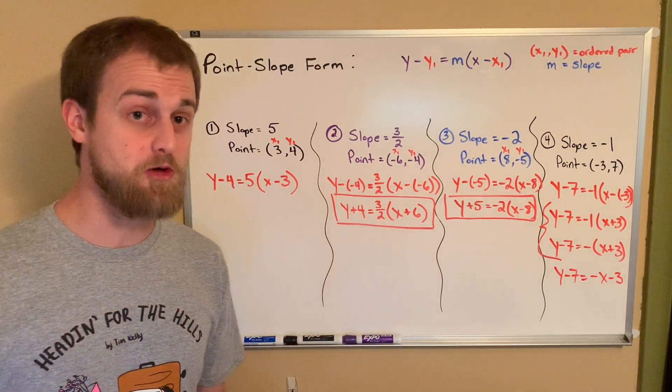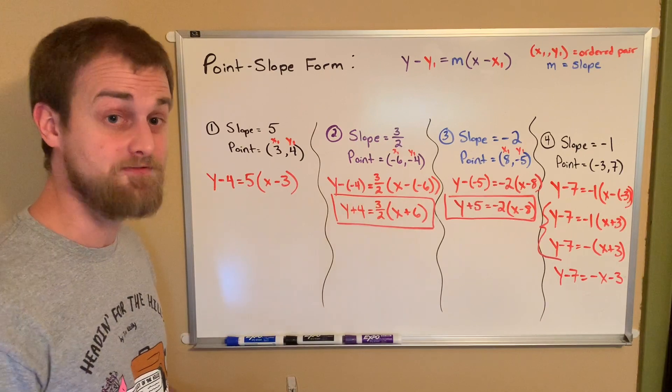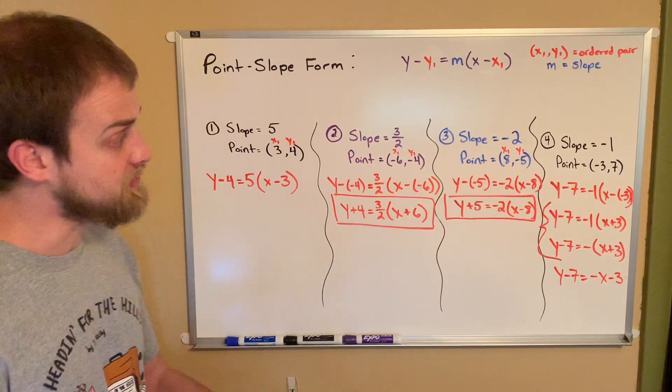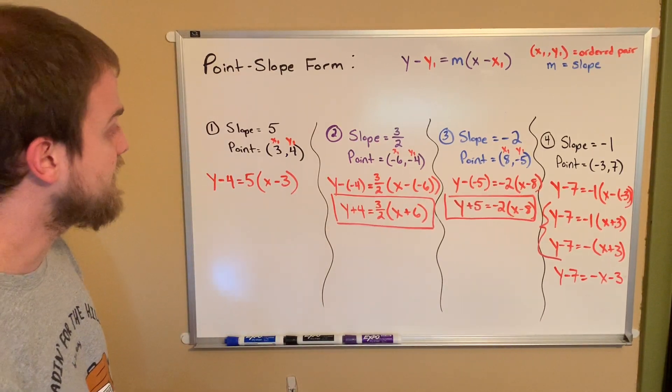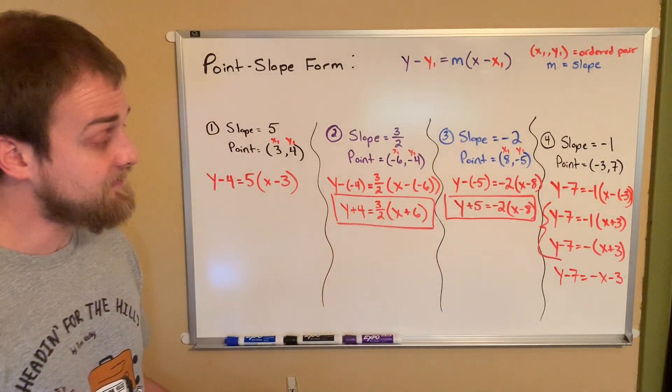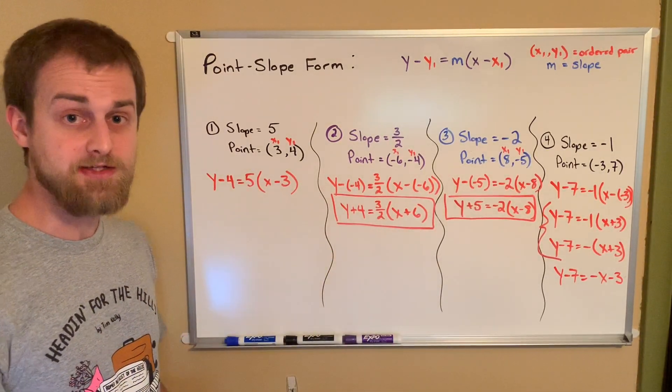But this is how we write point slope form. Again, it's just like slope intercept. It just tells us different information. So we're going to do a lot of similar practice with this moving forward here. But guys, that's all I have for you today in this one. We'll talk to you in the next one.